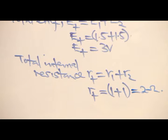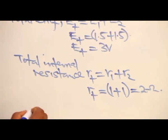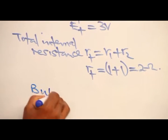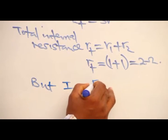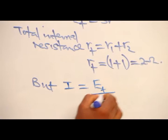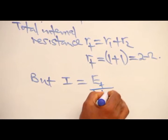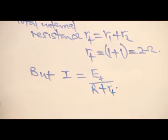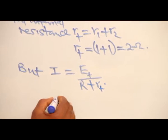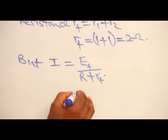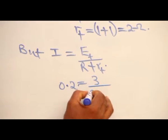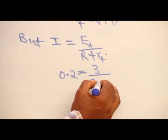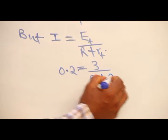Then if we apply the equation, current is equal to total EMF divided by the external resistance plus total internal resistance. The current is 0.2. Total EMF is 3. External resistance not known. Total internal resistance, 2.